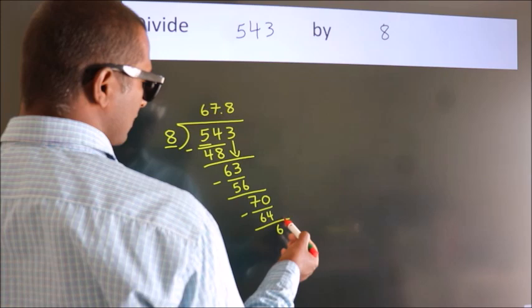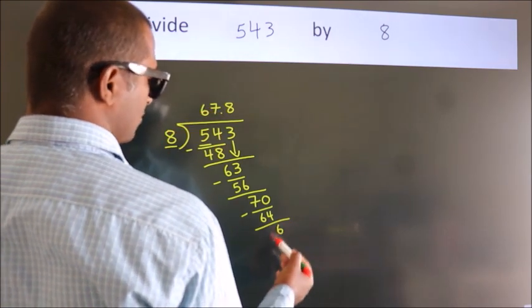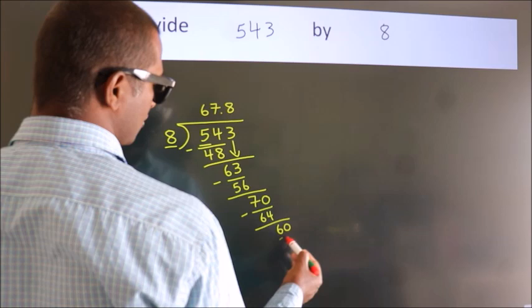After this, we already have the decimal, so directly take 0. So 60.